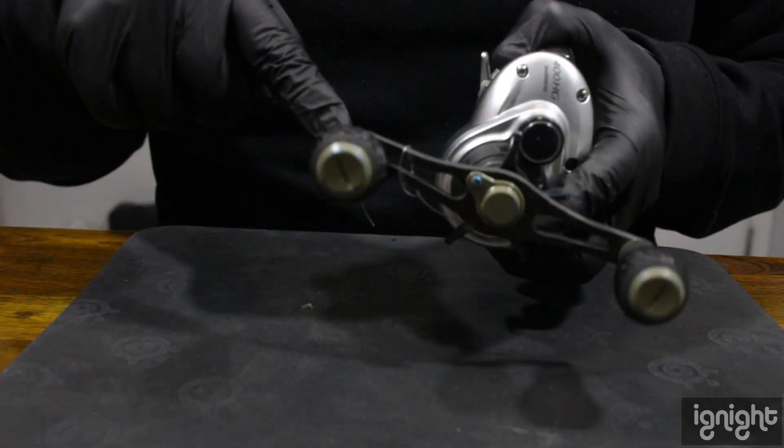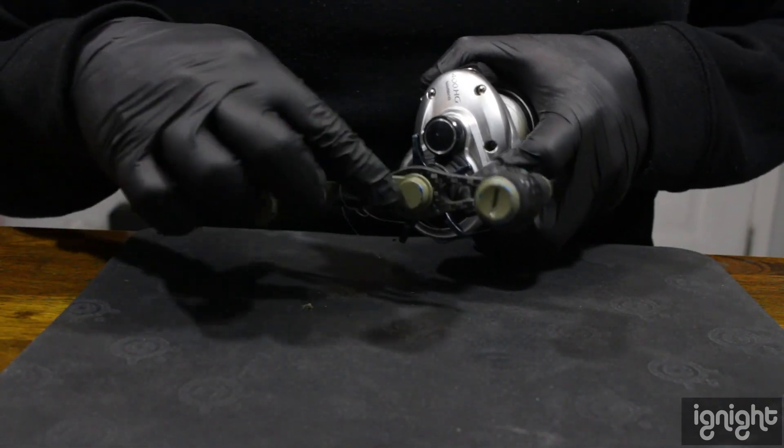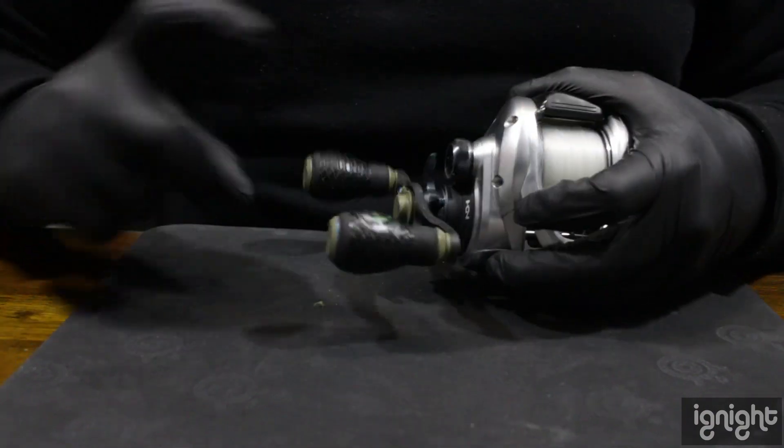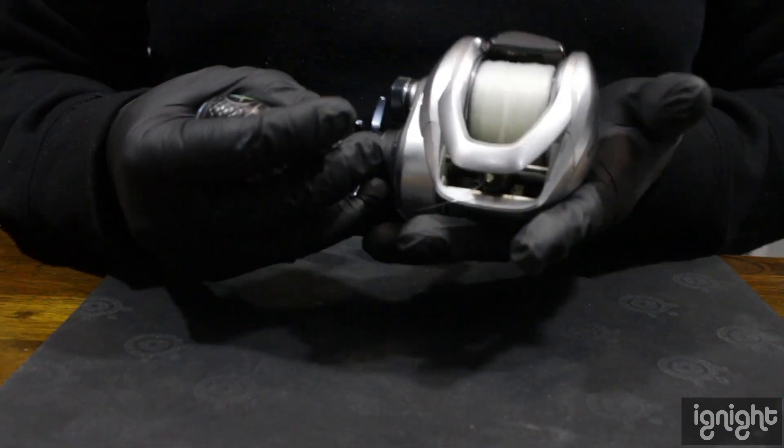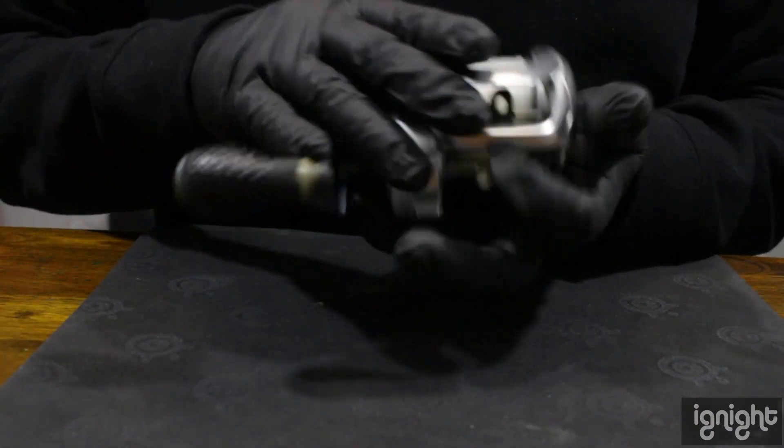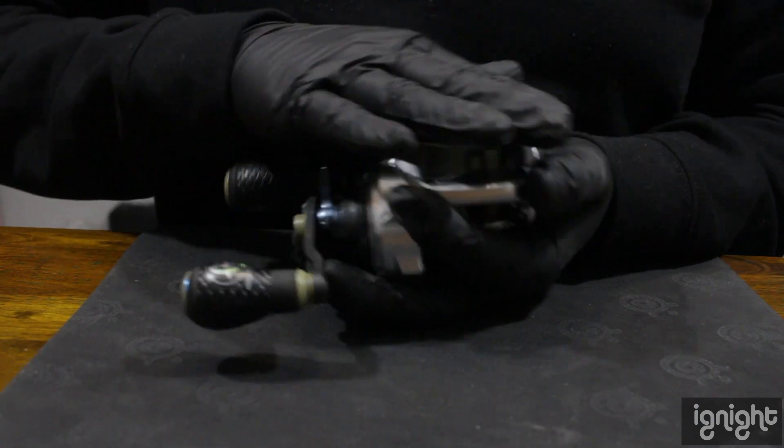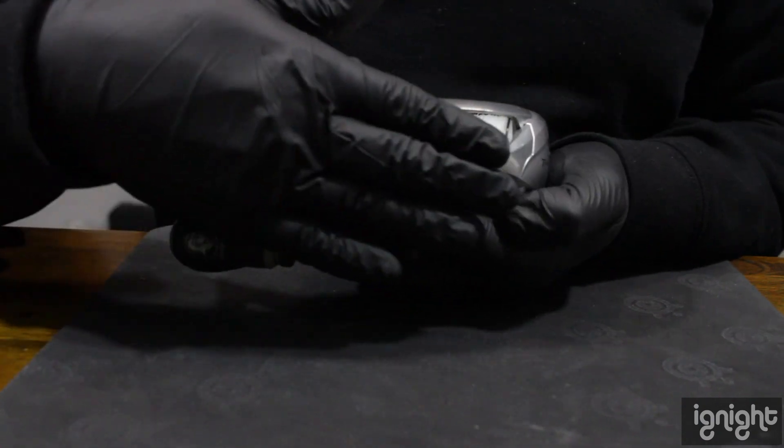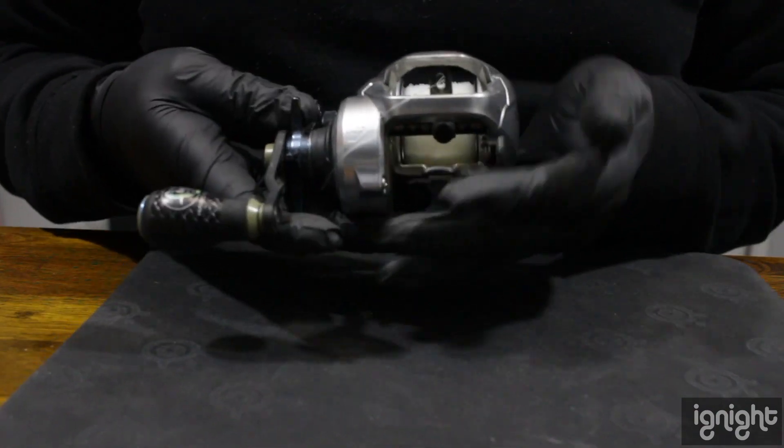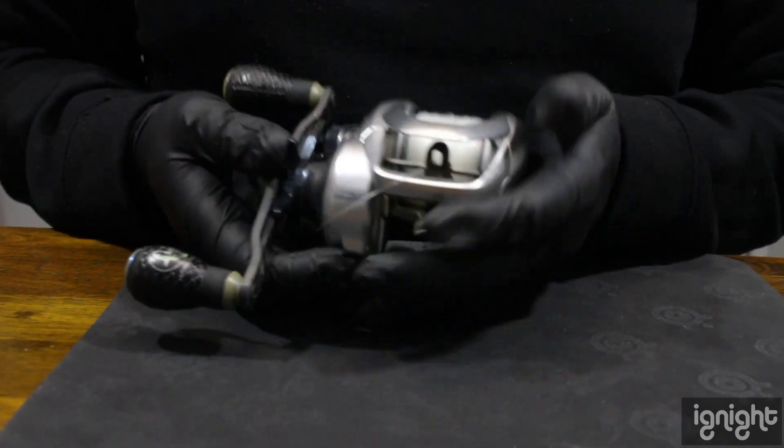I usually use the same stuff all the time, same baits, same gear. I take like two, three rods and pretty much everything I have. Now I'm cutting it to two rods, and I take the jerkbait and this one with the tracks.